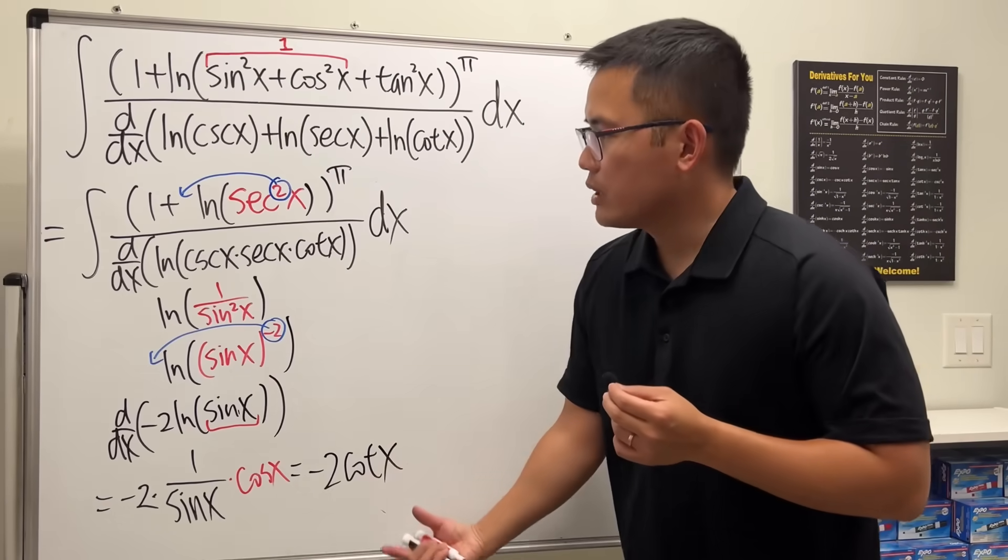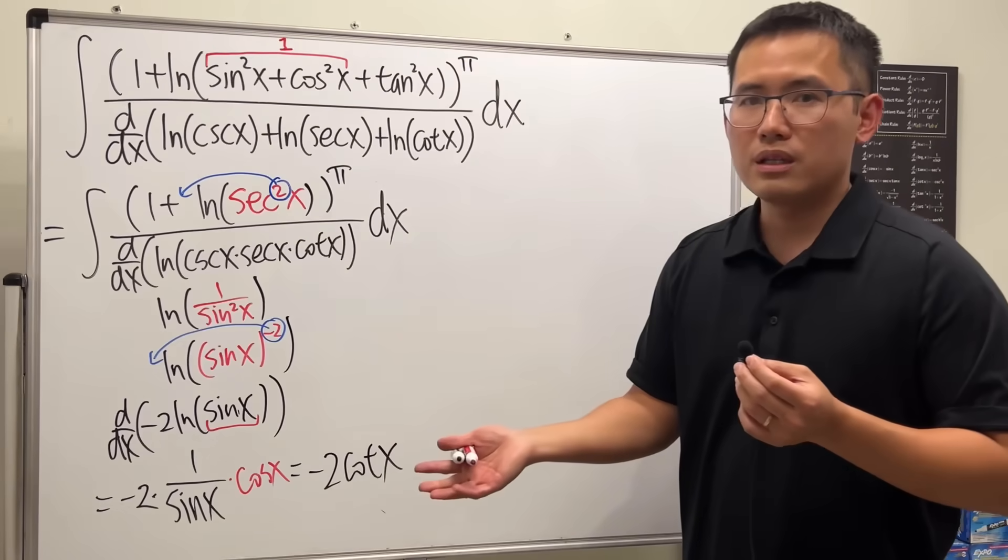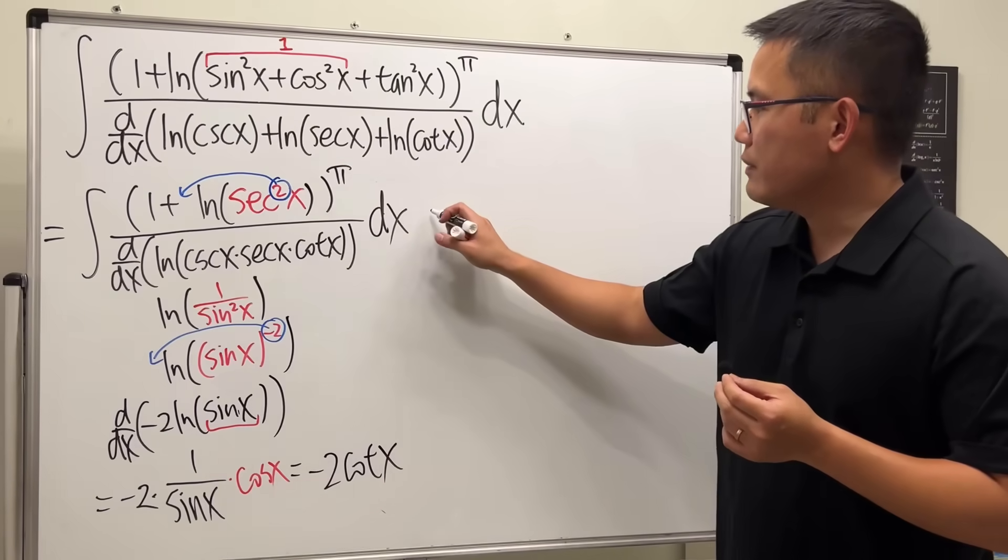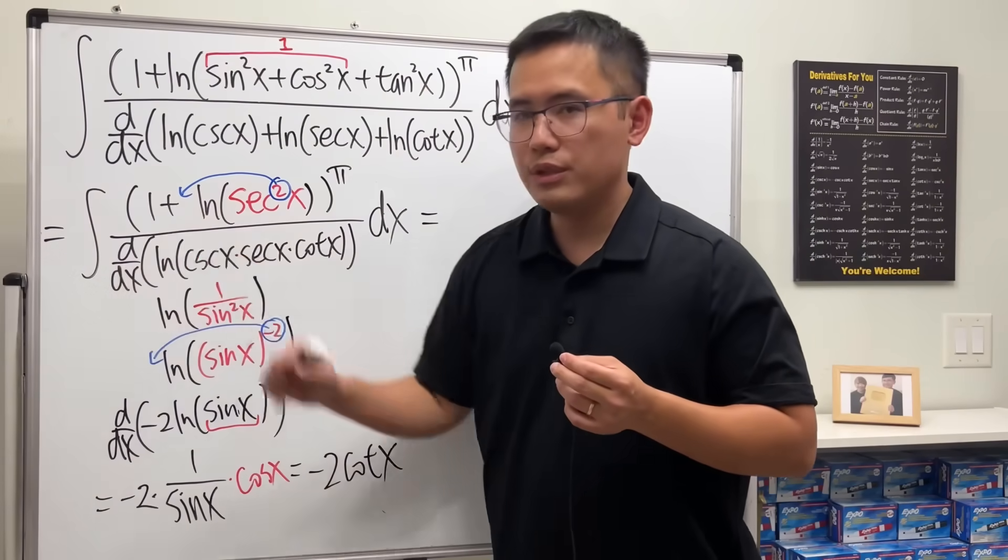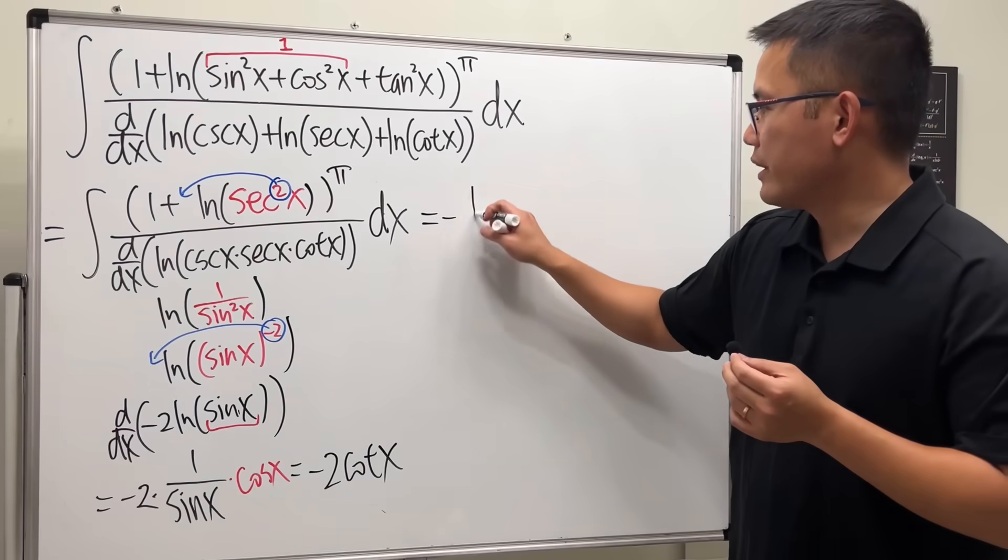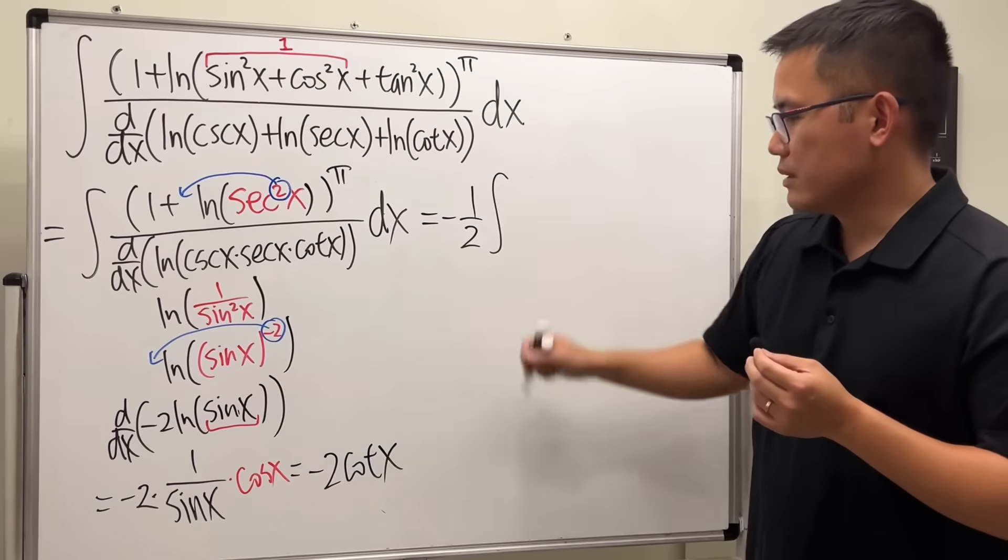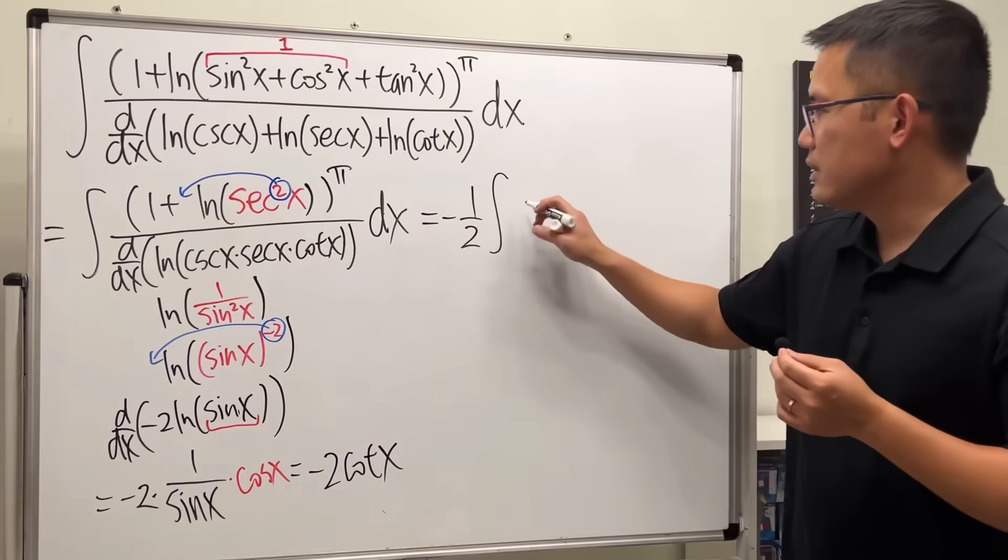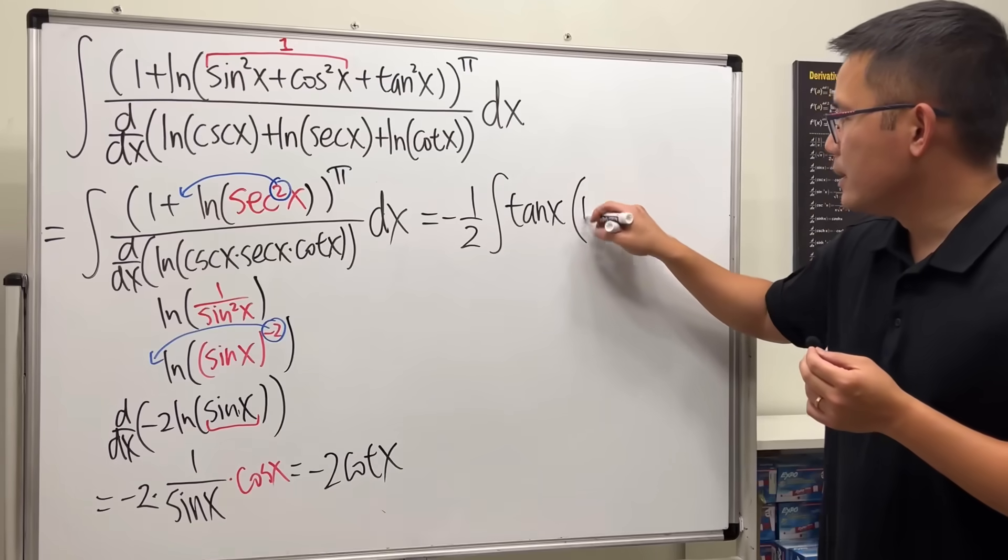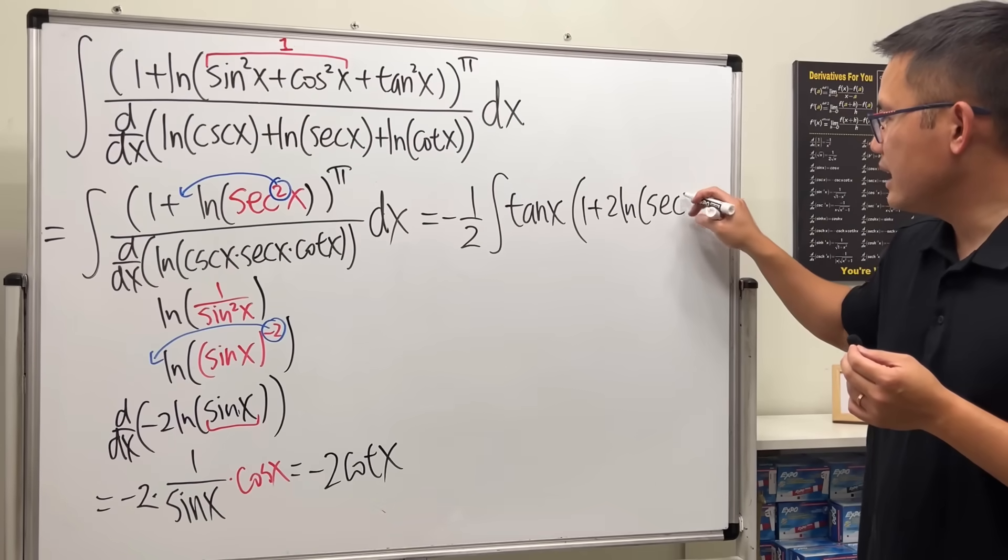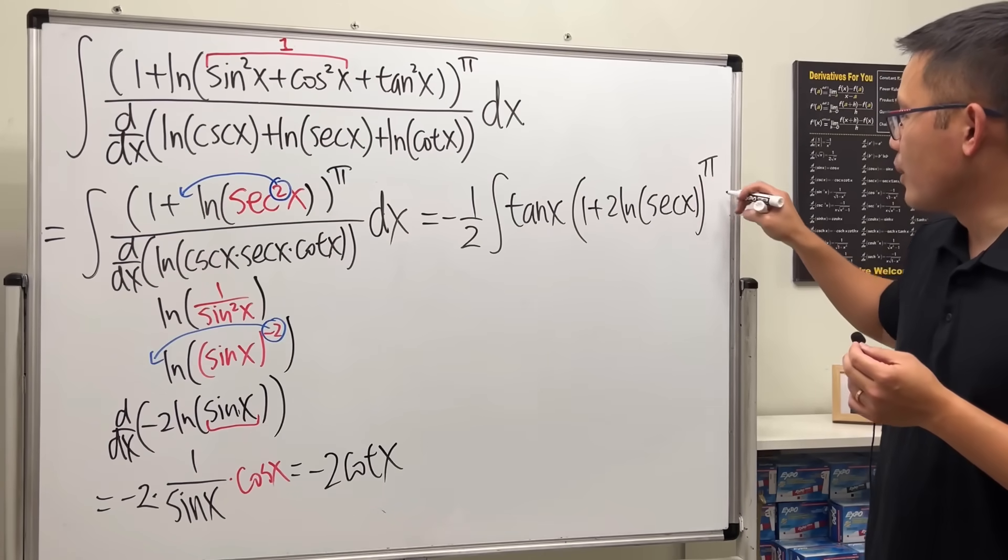Cotangent x on the bottom, we can put that to the top, and it becomes what? Tangent. So, have a look. This becomes negative 2 on the bottom, let's put it to the front. We have negative 1 half. And the integral. Tangent, right here, x, times 1 plus 2 ln of secant x, and then to the pi's power.